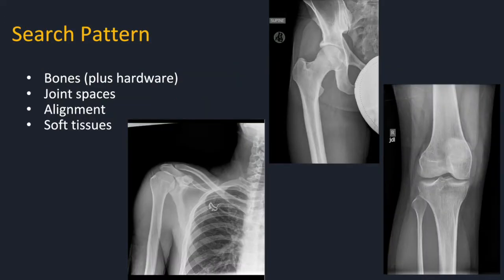This search pattern will apply to pretty much any MSK radiograph you encounter. Start with the bones, hardware if there is any, joint spaces, alignment, and soft tissues.